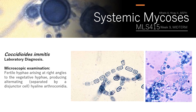For microscopic examination, fertile hyphae rise at right angles to the vegetative hyphae, producing alternating arthroconidia separated by disjunctor cells. The disjunctor cells appear lighter in staining. These are the arthroconidia characteristic of Coccidioides.